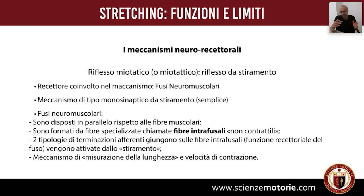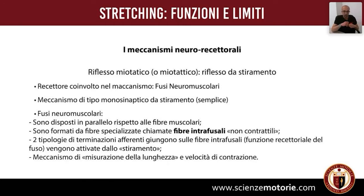I fusi neuromuscolari sono disposti parallelamente e la loro principale caratteristica è che nel proprio nucleo hanno una quasi totale assenza di miosina e actina, le strutture che permettono la contrazione muscolare. Sono sostanzialmente composti da fibre intrafusali che tendenzialmente non hanno possibilità di contrarsi, proprio perché il meccanismo principale è quello di percepire l'eccentricità o la lunghezza muscolare.